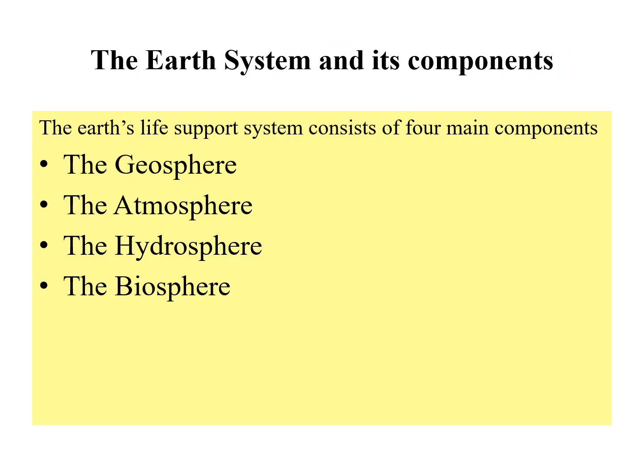The Earth's life support system basically consists of four main components: the geosphere, the atmosphere, the hydrosphere, and finally the biosphere. The first three components — the geosphere, the atmosphere, and the hydrosphere — make up the physical environment, and the biosphere makes up the living environment.